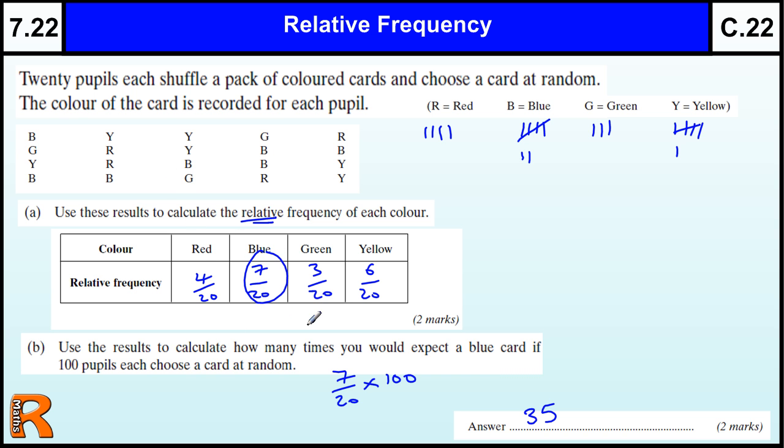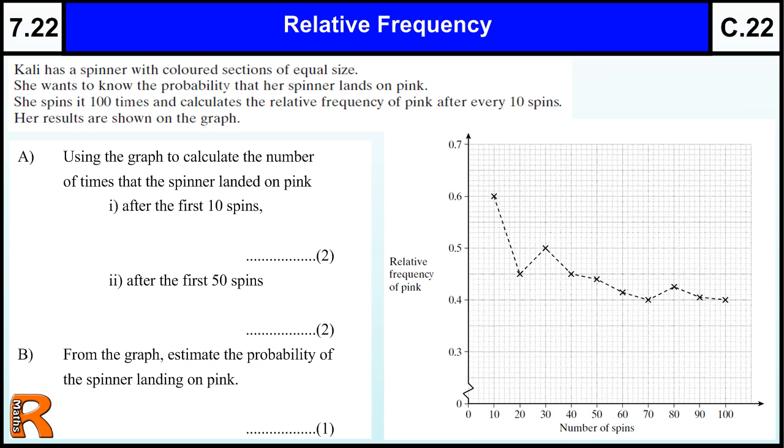Now, that's doing it in an experimental way. Sometimes, you're given the results in the form of a graph. And so, maybe the results are told on a graph like this. So, the probability after 10 trials, 10 spins is 0.6. After 20 spins, it was calculated to be 0.45, then 0.5 and so on until you get to here.